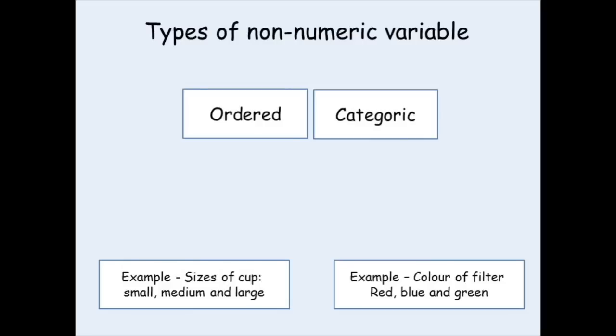If your independent variable is a non-numeric variable, it could be ordered or categoric. An example of an ordered variable is the sizes of cup. The sizes could be small, medium and large. So, your independent variable is represented by words. But, these words can be put into an order. Small, then medium, then large.